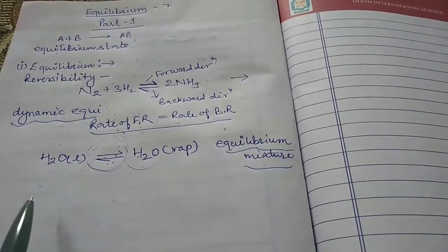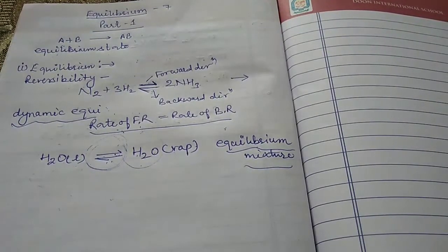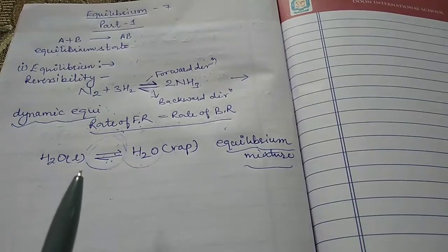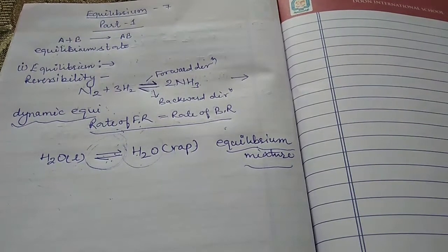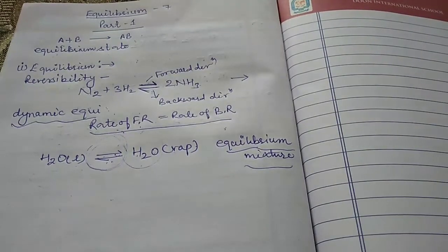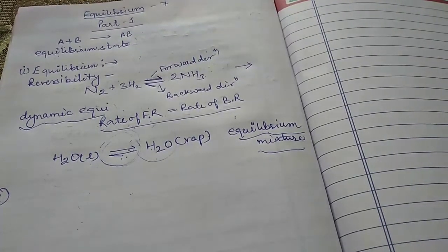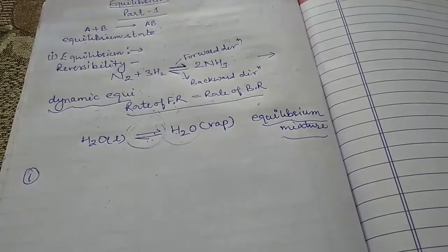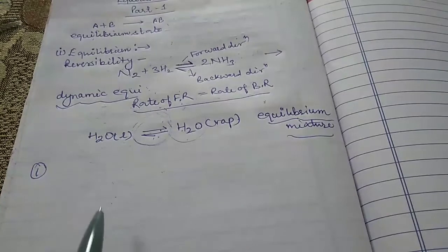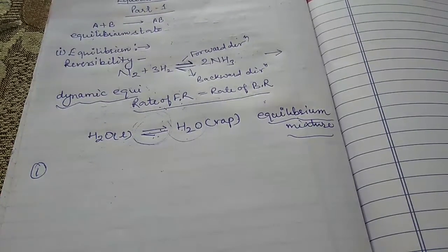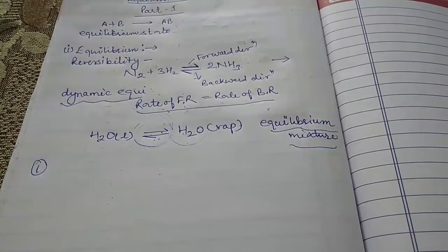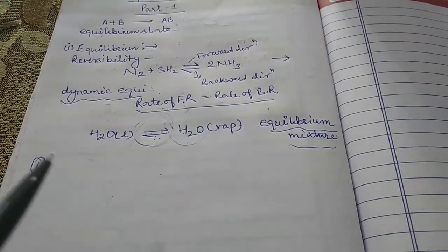The first possibility is that the reaction proceeds nearly to completion — the reaction is going to be complete, meaning very negligible reactant is left. The second possibility is reactions in which only a small amount of product is formed. There are many reactions where only small amounts of products are formed and most of the reactant remains unchanged at the equilibrium state — meaning the whole reactant is not utilized.